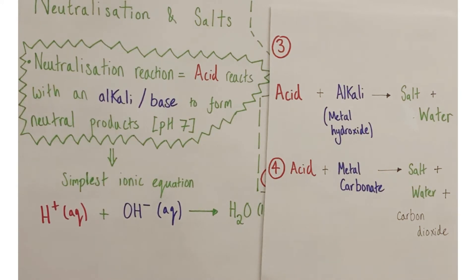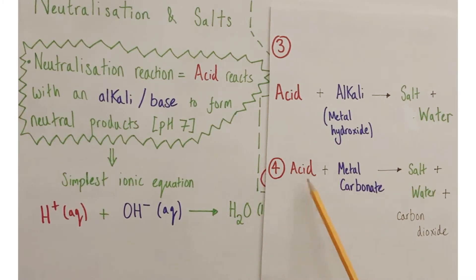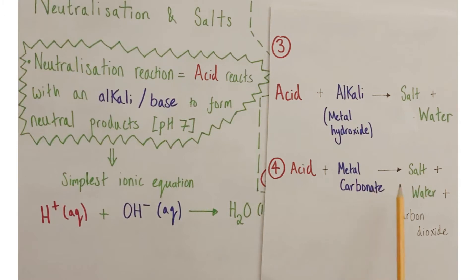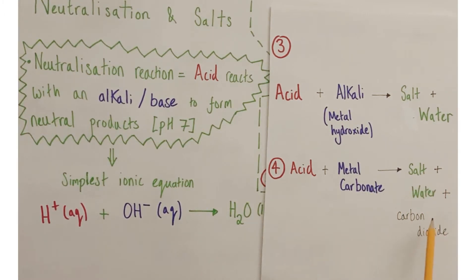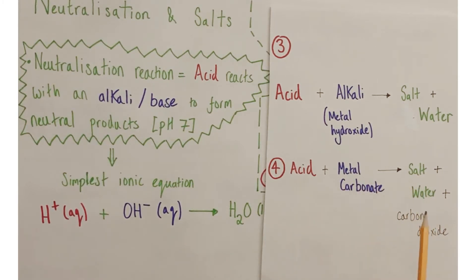The fourth general equation: acids reacting with metal carbonates — compounds containing the carbonate ion CO3²⁻ — to form salt, water, and carbon dioxide. Again, you'll see fizzing in this reaction, producing a neutral salt, neutral water, and carbon dioxide gas.